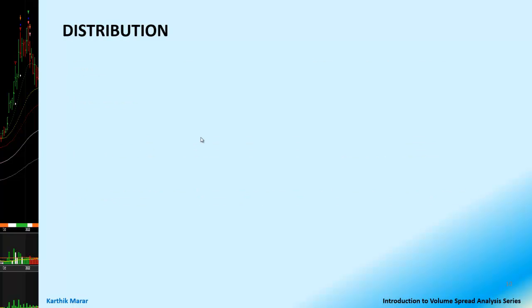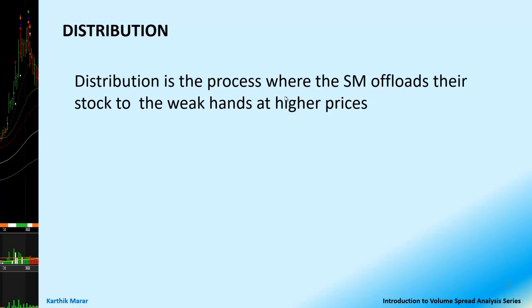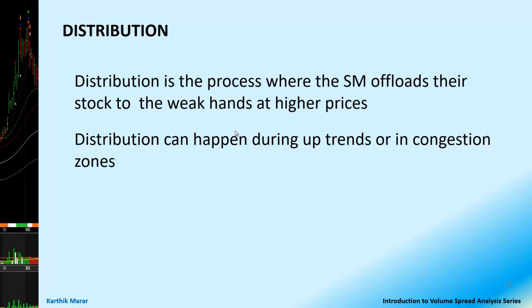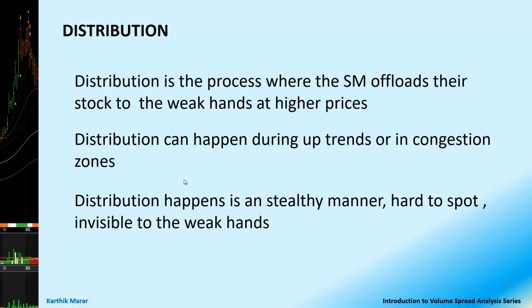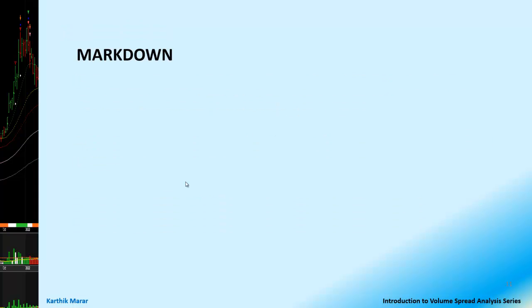Distribution is a process where the smart money or the strong hands offload their stock to the weak hands at higher prices. Like the trader passing off the monkeys to the villagers, the smart money offloads their stock to the weak hands at much higher prices. Distribution can happen during the uptrend as well, or in congestion zones. Distribution happens in a stealthy manner — very hard to spot, invisible to the weak hands. Finally, when the distribution is completed, the markdown phase starts.